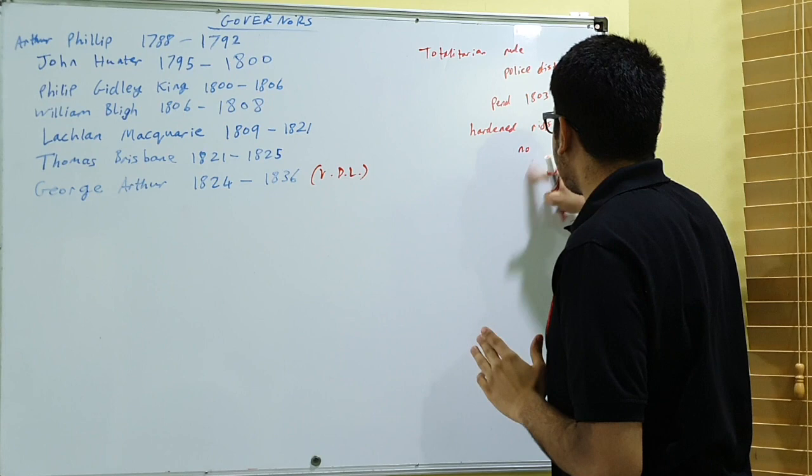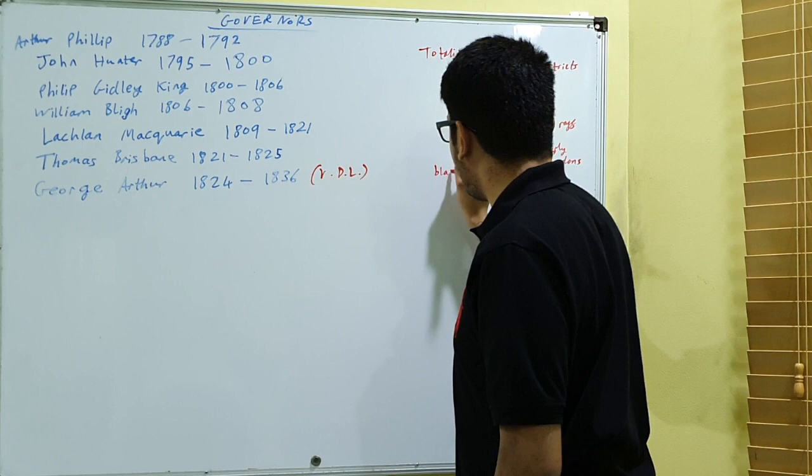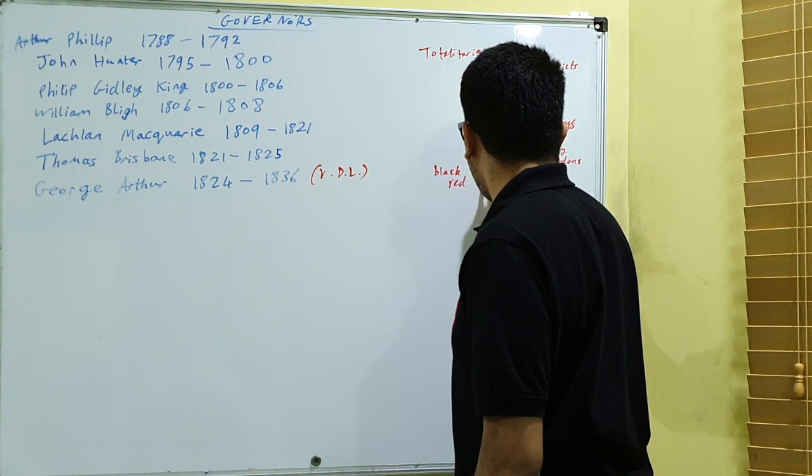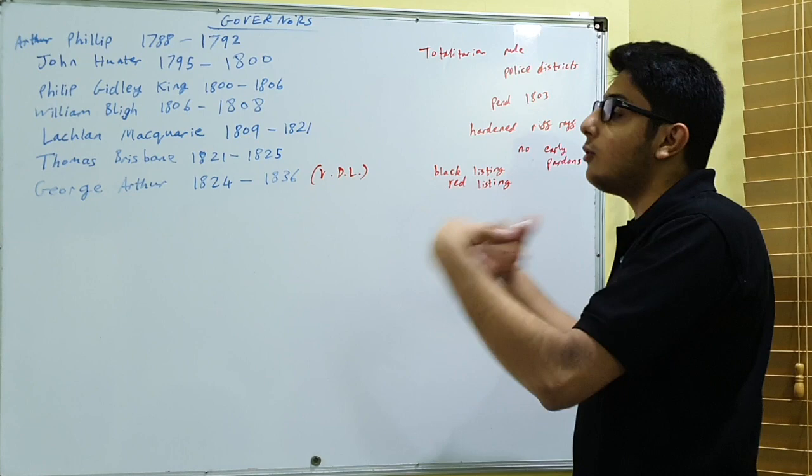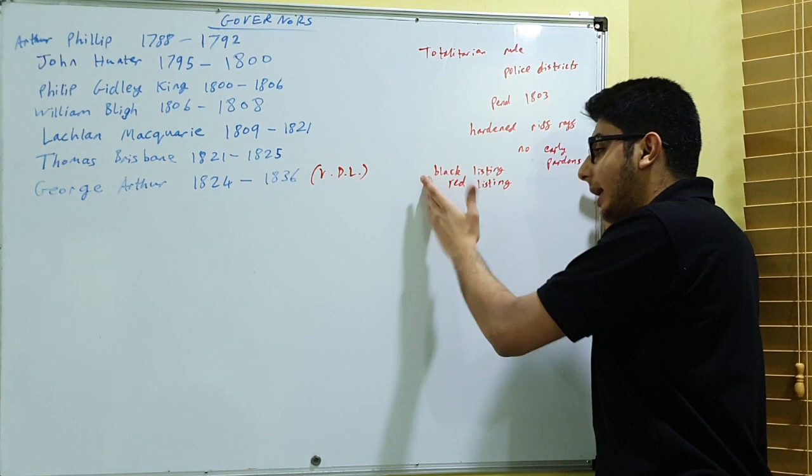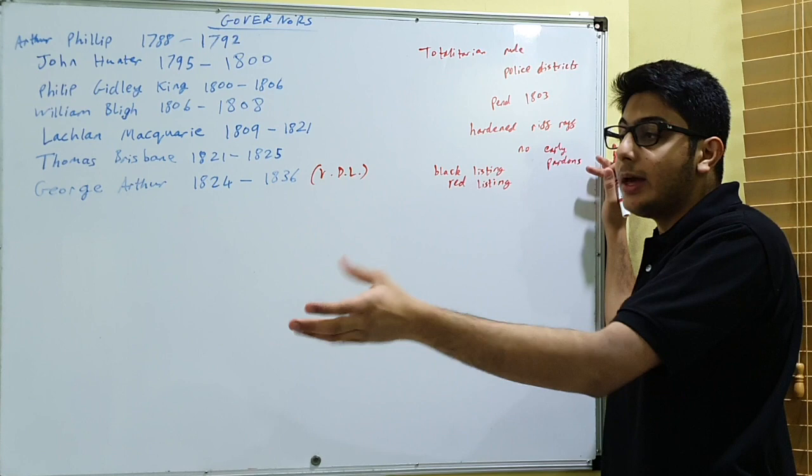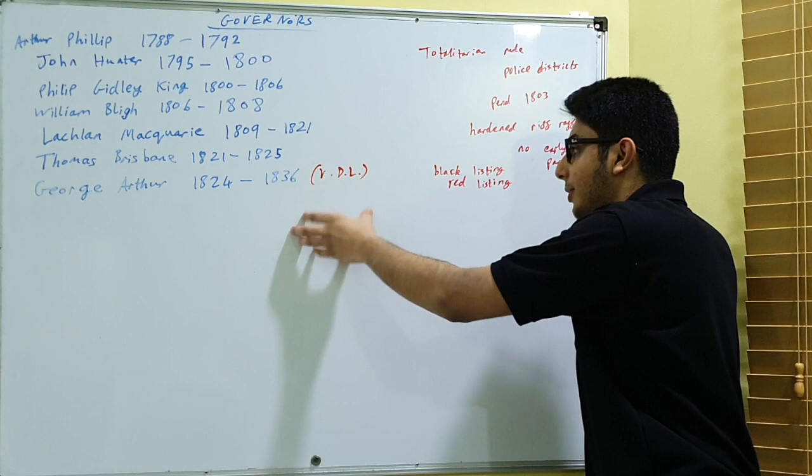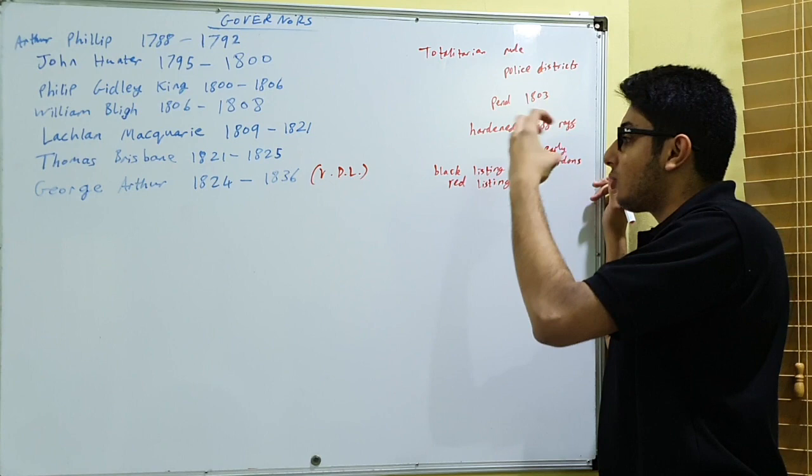There were no early pardons and he had something called blacklisting and redlisting. Meaning that if you fraternized with the convicts or you did not follow policy, you did not conform or you dissented, then you would be either blacklisted or redlisted. Blacklisted meaning labor that you have in terms of the convict labor that you are assigned would be withdrawn. And redlisting is a warning that it would be withdrawn. So George Arthur maintained a totalitarian control or rule over the area through this threat of withdrawing labor.